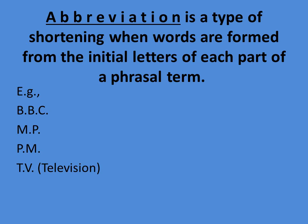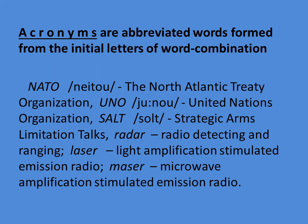The next type is abbreviation. Abbreviation is a type of shortening when words are formed from the initial letters of each part of a phrasal term. Examples include BBC — British Broadcasting Corporation, MP — Member of Parliament, PM — Prime Minister, TV — Television, and so on.